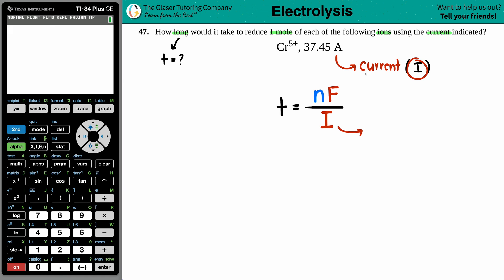We already just saw that I is the current, and that's the 37.45 amps here. F is Faraday's constant, it's always a constant value: 96,485 coulombs per mole if you want to know those units.